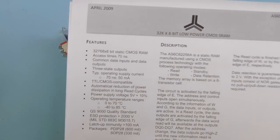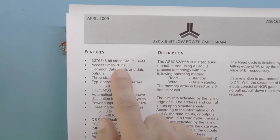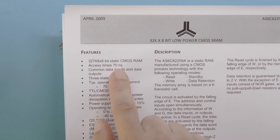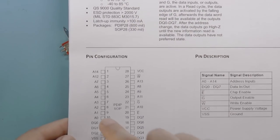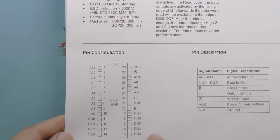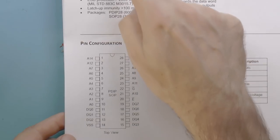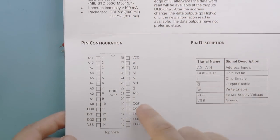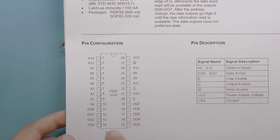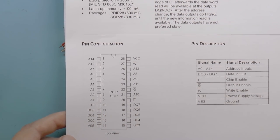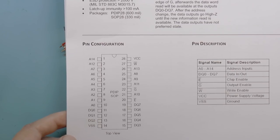We can see that the chip has an access time of 70 nanoseconds. That means when you present an address on the address lines, then 70 nanoseconds later, at most, the data will appear on the output.